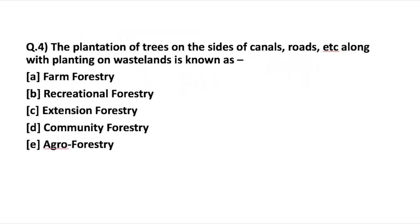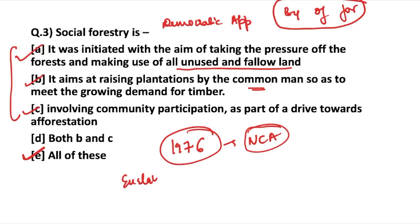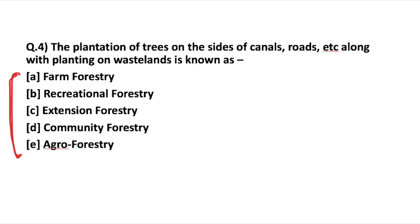The next question covers the classification of social forestry. The plantation of trees on the sides of canals, roads, etc., along with planting on wasteland is a category of social forestry. A very famous example of social forestry was the eucalyptus drive — planting eucalyptus on the sides of roads to promote forestry. Farm forestry is the type where trees are grown on farmland to produce timber, oil, and charcoal, done simultaneously with normal agricultural production.